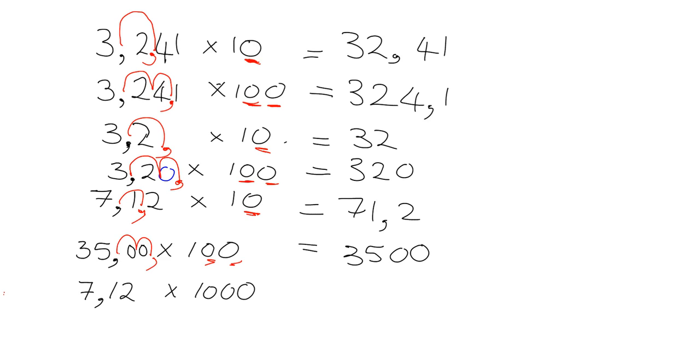What about 7,12 times 1,000? This is one of those ones where I'm going to throw in an extra 0 here just so that I have the things to move over. So I've got 1, 2, 3 zeros, and so I'm going to move 1, 2, 3 steps over, and I get my answer of 7,120.